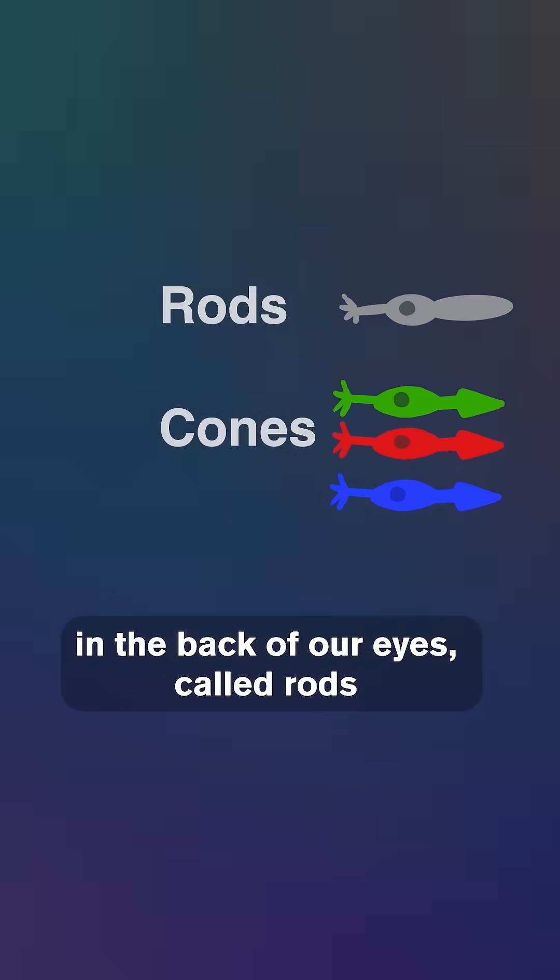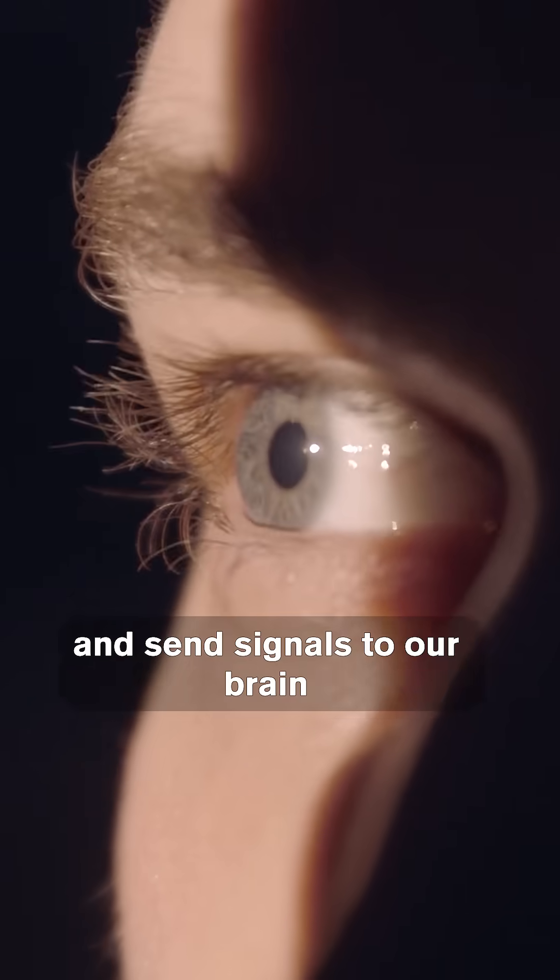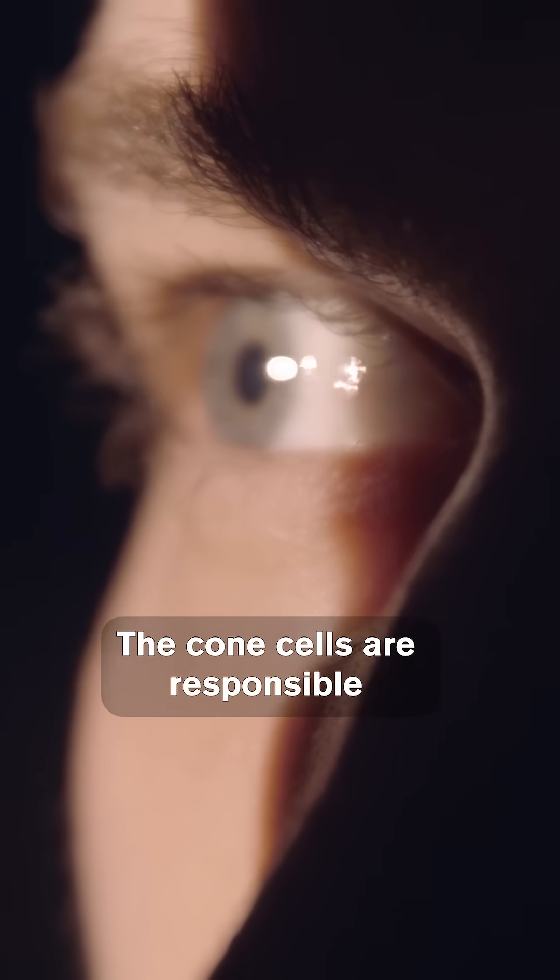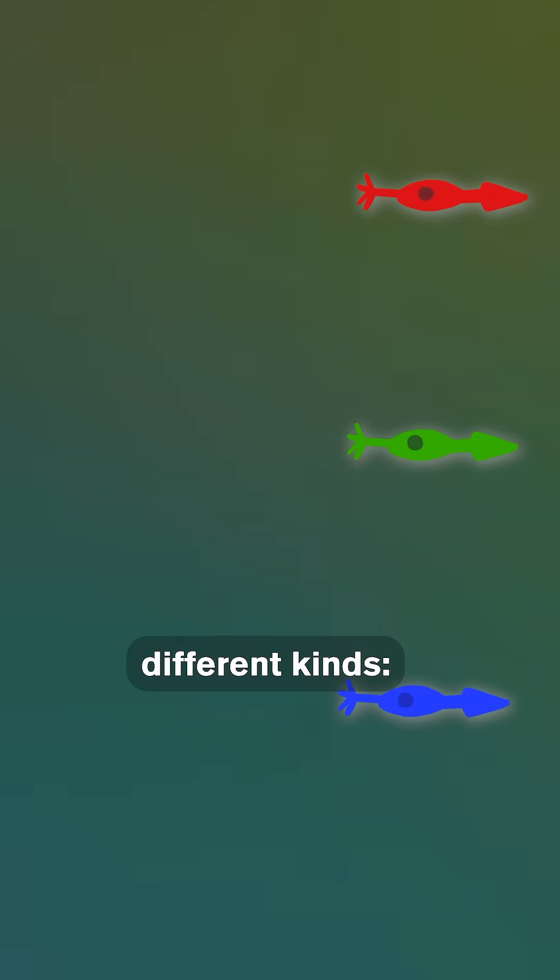Tiny cells in the back of our eyes called rods and cones take in light and send signals to our brain to create the images that we see. The cone cells are responsible for sensing color, and there are three different kinds.